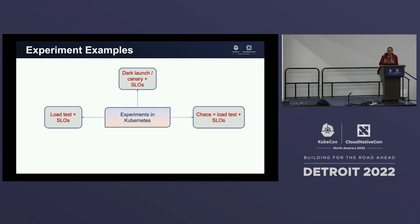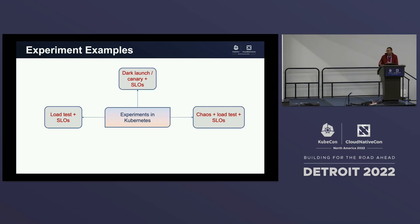How about resiliency? Maybe a pod goes down in the cluster or a node goes down, and you want to see how the application is holding up in the midst of these instabilities. This is where chaos testing comes in. Chaos is a way to inject this type of instability in a very controlled manner into the infrastructure and see how your application is performing. That's an example of a resiliency experiment.